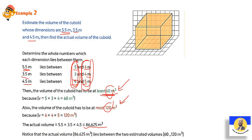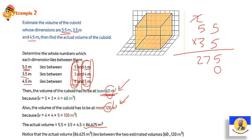Now let's take 5.5 times 3.5 times 4.5 and start multiplying. First: 5.5 times 3.5 — write as 55 and 35. Then multiply: 5×5=25, carry 2; 5×5=25+2=27. Put 0. Then 3×5=15 carry 1; 3×5=15+1=16. Make addition: 5, then 7+5=12 carry 1, then 2+6+1=9, then 1. Place decimal point before 2 digits. Result: 19.25.